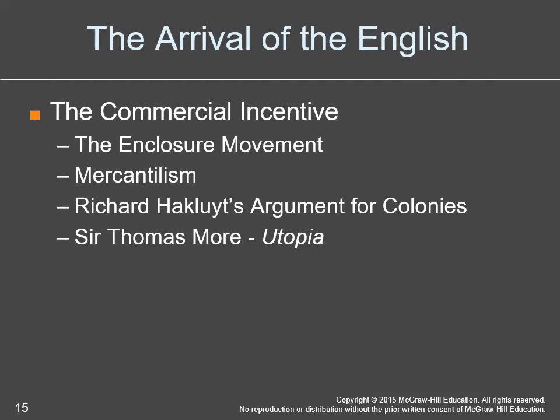Then you get the arrival of the English. There are really three groups: the Spanish, the French, and the English. For the English, the enclosure movement kicked people off the land as landowners turned to raising sheep — it was easier and more profitable. This created a movement toward mercantilism — the idea that having a favorable balance of trade makes your country wealthier. To facilitate that, you need colonies, which provide raw goods that get taken back to the mother country, processed into finished goods, and sold back to the colonies.